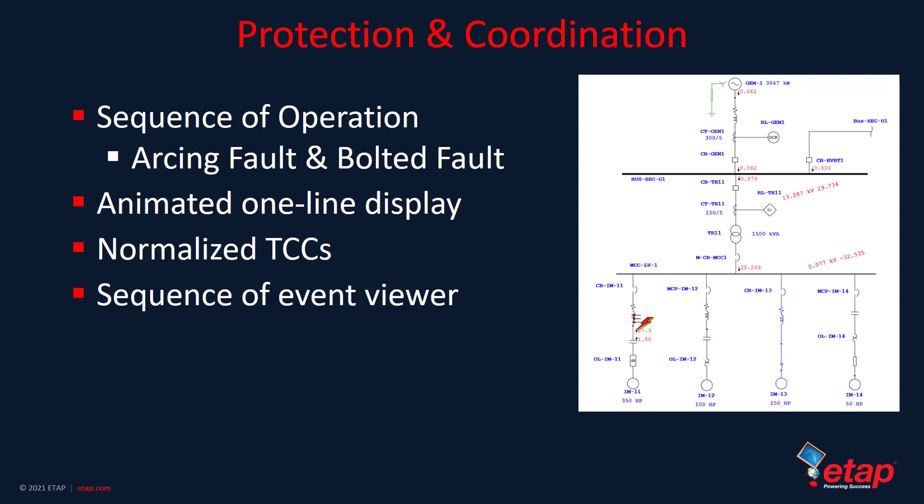You can see from the animated one-line display that you can specify a location where to place a fault — whether it is a single line to ground, a line to line, or a three-phase bolted fault. You can place the sequence operation indicator, that little lightning bolt, and ETAP would provide graphically the sequence of events.